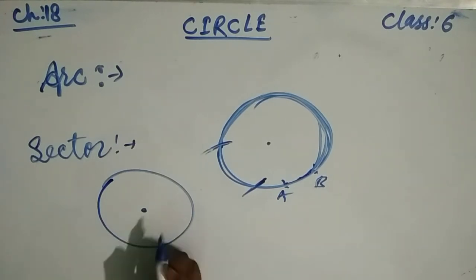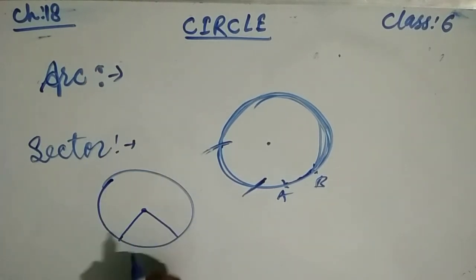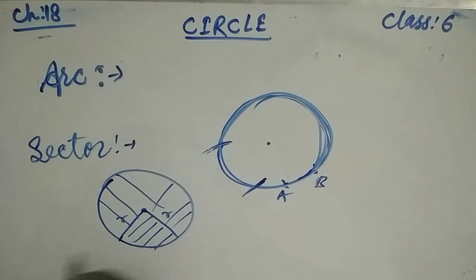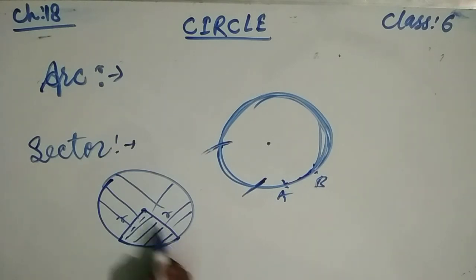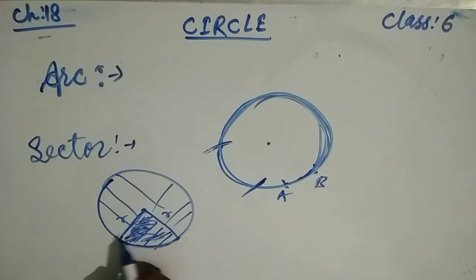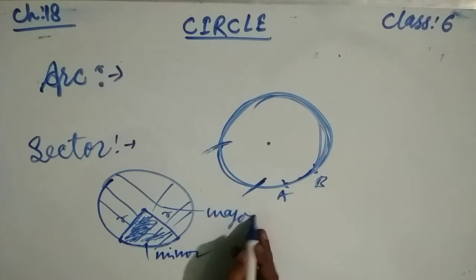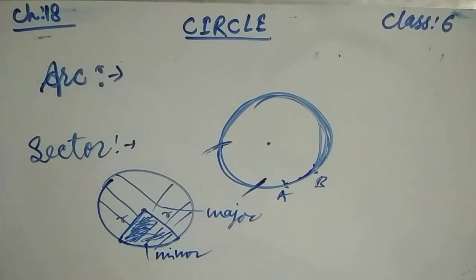Now let's look at the sector. There are two types of sectors: minor sector and major sector. A sector is a closed figure bounded by two radii and an arc of the circle. Similarly, there are two types of segments: minor segment and major segment.